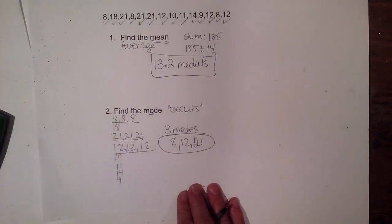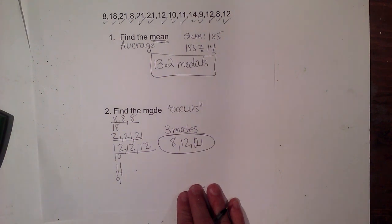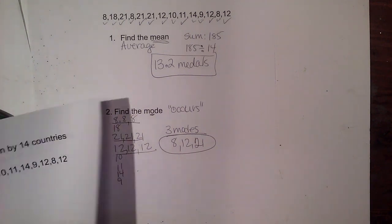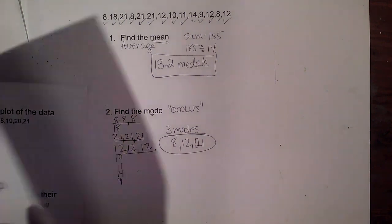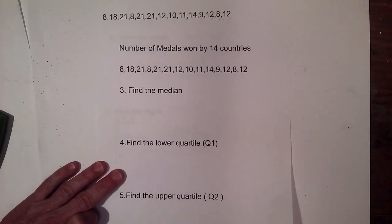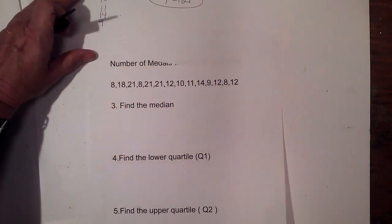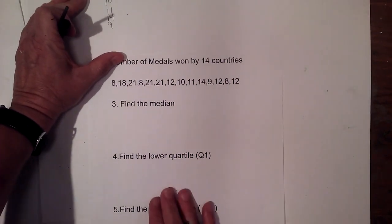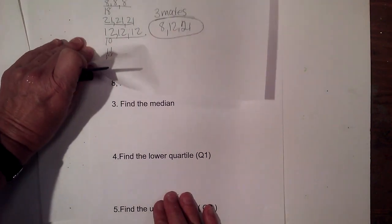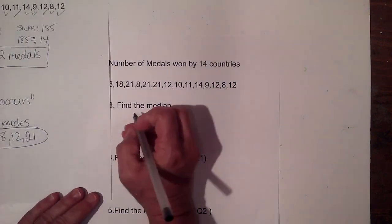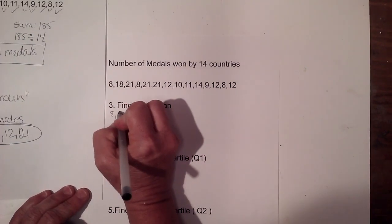Now we're going to take that same data set and find the median. To find the median, we want to put the numbers in order from smallest to greatest. I'm going to use the list I already made to help me. I'll start listing from smallest to largest — so I had three 8s: 8, 8, and 8. That covers those three.